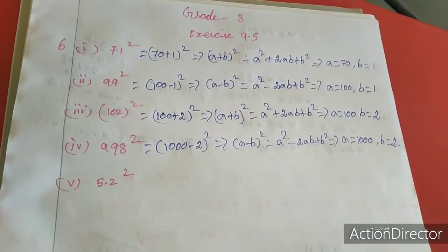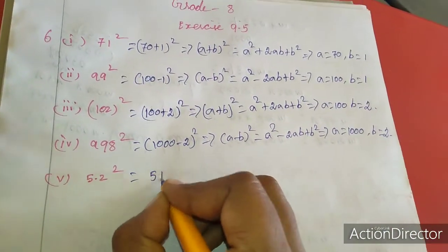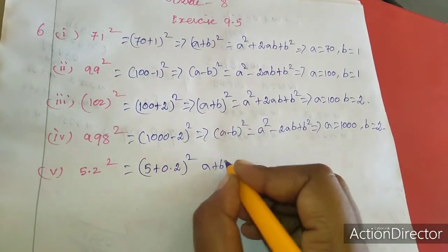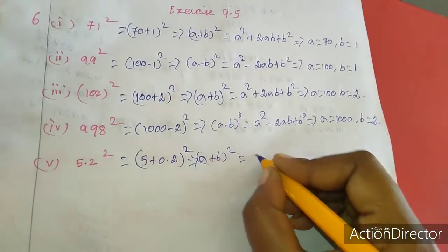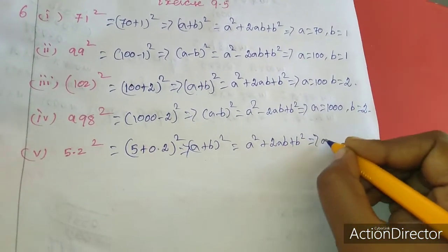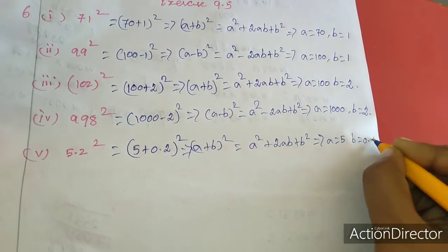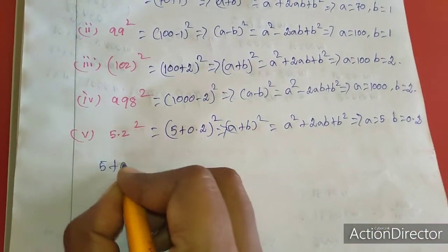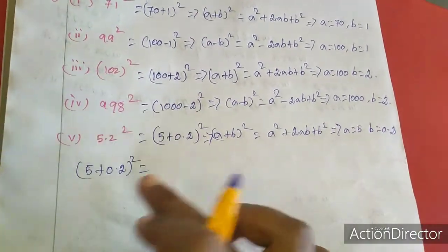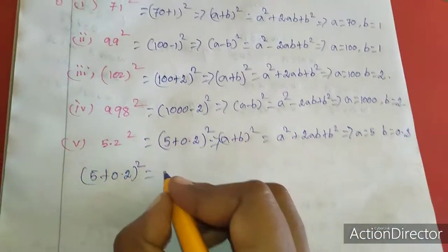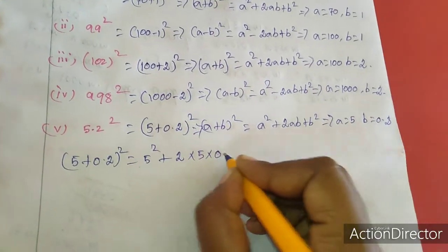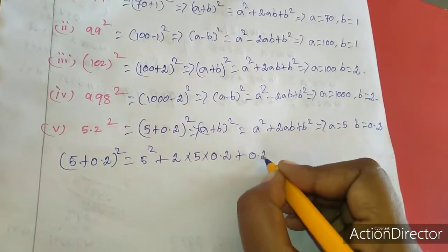Now the 5th sum: we split 5.2 as 5 plus 0.2, the whole square. Using a plus b whole square formula: a squared plus 2ab plus b squared. Here a value is 5 and b value is 0.2. So 5 plus 0.2 the whole square equals 5 squared plus 2 into a into b plus 0.2 squared.